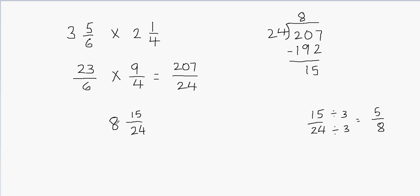So I can replace 15 over 24 with 5 eighths. The final answer is 8 and 5 eighths, and I can't reduce this anymore. Whenever you have an improper fraction, make sure you convert that into a mixed fraction — then that's going to be your final answer.